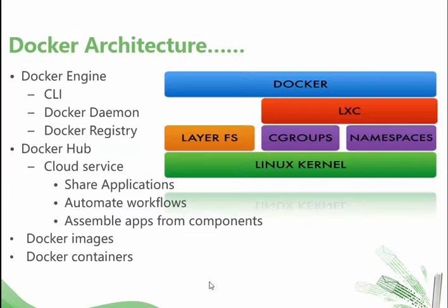Docker architecture. The Docker engine includes a command line interface, a Docker daemon process running, and a Docker registry. Docker Hub is a cloud service where we can share our applications, automate workflows, and assemble apps from components.